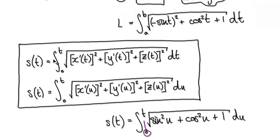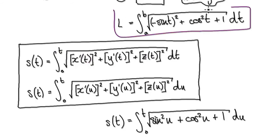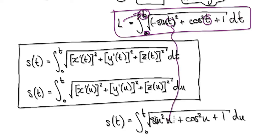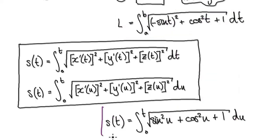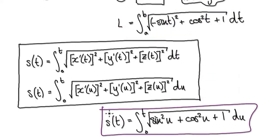But remember from the previous video, we need to change all the t's to u — to a different variable u — because we don't want this t to clash with these t's here. So looking at the arc length, because we want to do it from zero to t, we need to change the t to u. Change this t to u, and integrate it with respect to u. Now this is our variable t. So that will then take us to here — the arc length is given by this.